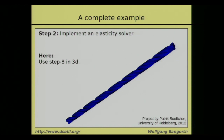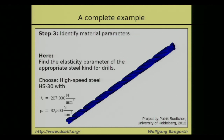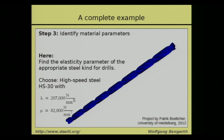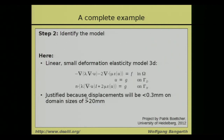Implementation was straightforward because step eight of deal.II already solves the elasticity problem — we just needed to change the right-hand side and the geometry. Patrick then found the material properties: the steel used in drills is high-speed steel HS30, which has a compression modulus of 207,000 Newton per square millimeter and a shear modulus of 82,800. These are the two coefficients — lambda and mu — that go into the elasticity equation.